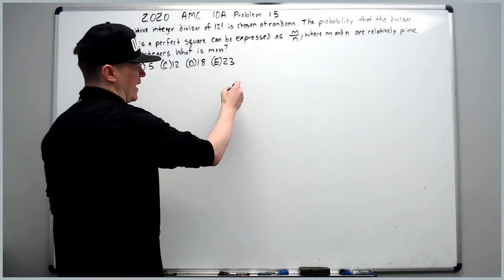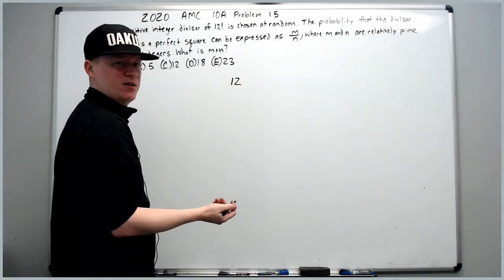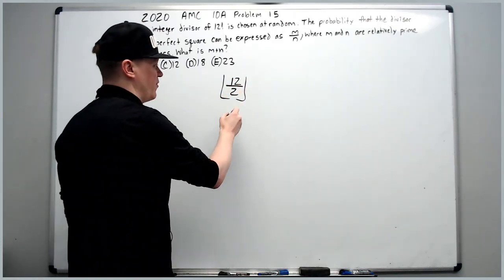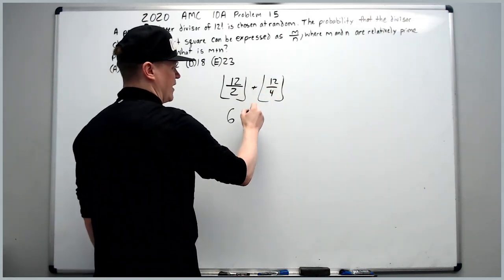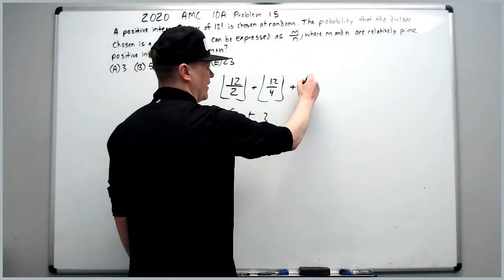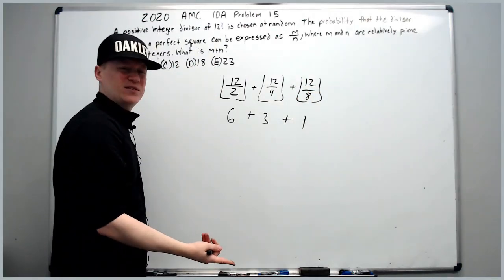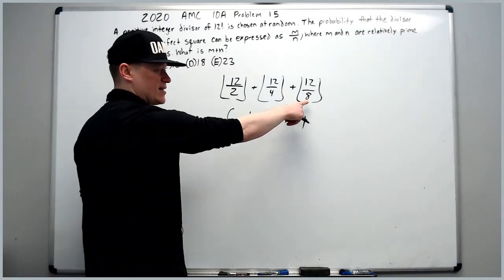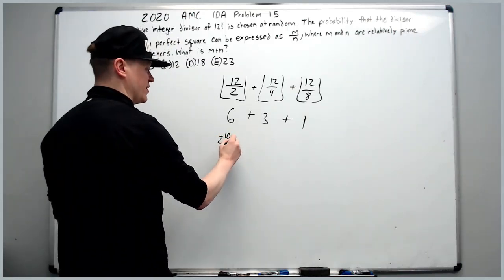To find the prime factorization of 12 factorial, we count powers of each prime. For powers of 2: 12 divided by 2 rounded down gives every even number, plus 12 divided by 4 for multiples of 4, plus 12 divided by 8. We don't need 16 since there are no factors of 16 in 12 factorial. Adding these up gives 2 to the 10th.